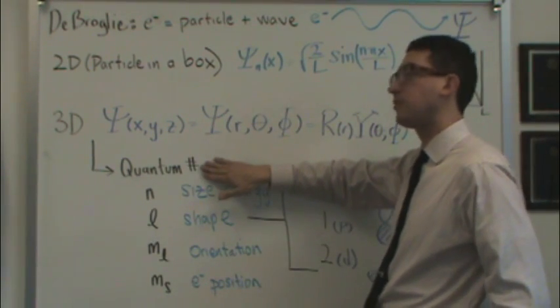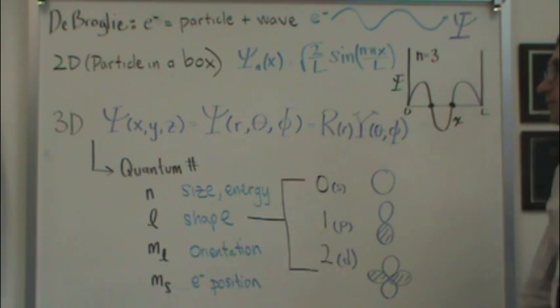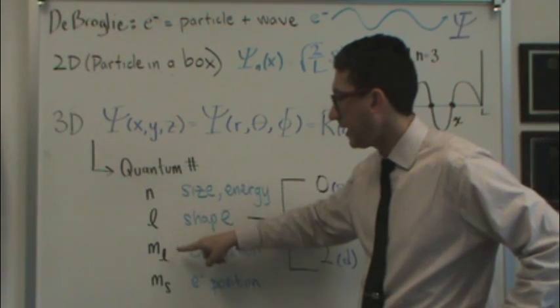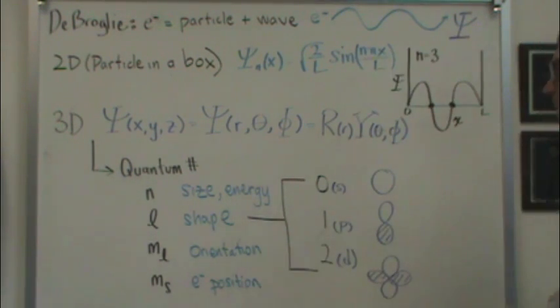Well, the answer comes in what we call quantum numbers. And there's four quantum numbers, n, l, m sub l, and ultimately you'll learn m sub s as well. These are significant because once you know the quantum numbers, you can easily draw the function.